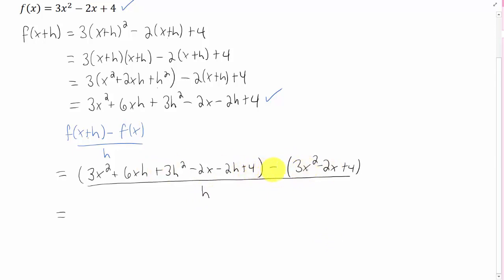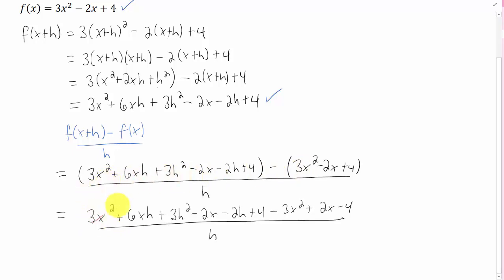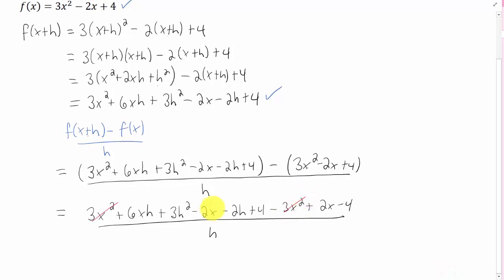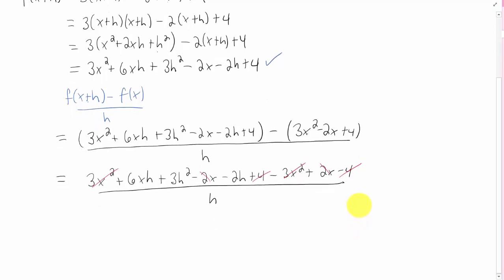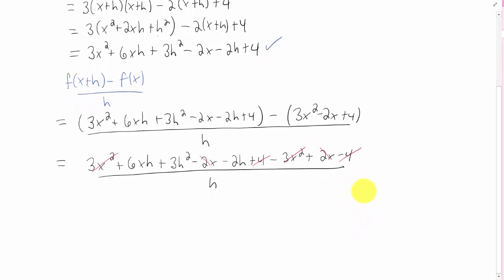Now I'm going to distribute this negative sign through, and I'm going to write this line out one more time. Then we're going to be able to cancel. You'll notice that the 3x squareds cancel, the 2xs cancel, and the 4s cancel. If you don't get a bunch of cancellations, then something has probably gone wrong.